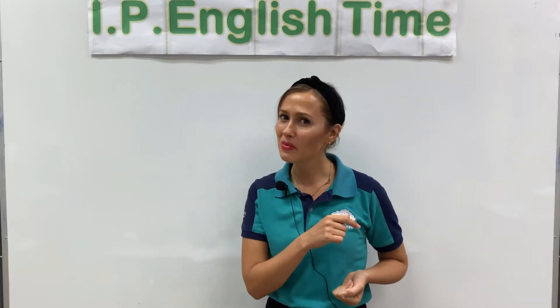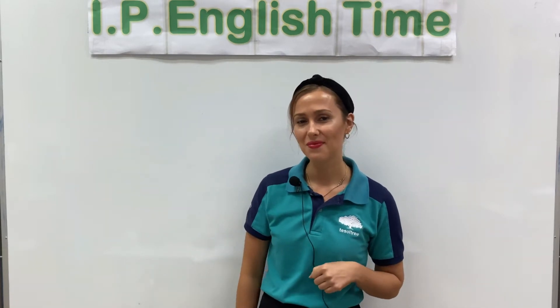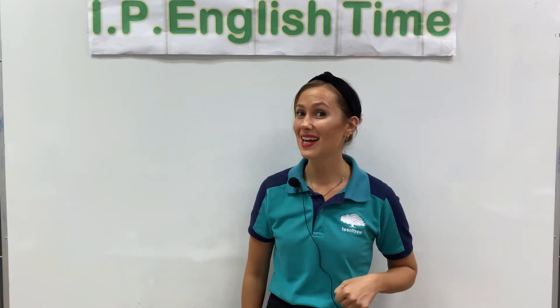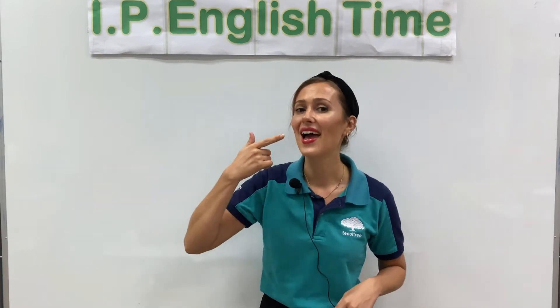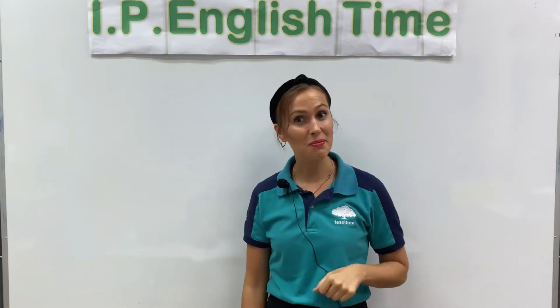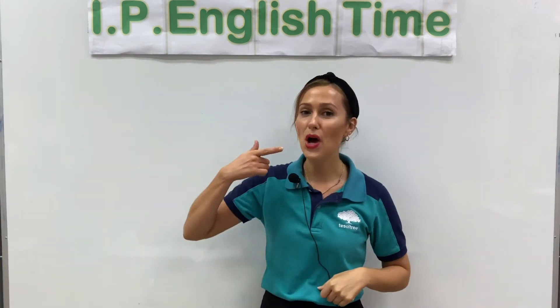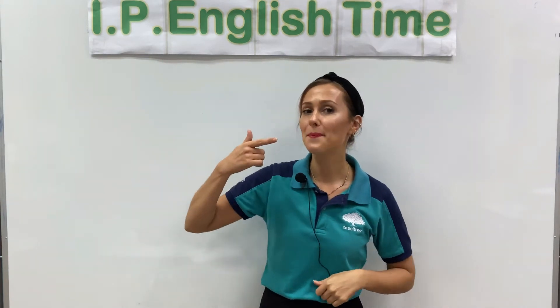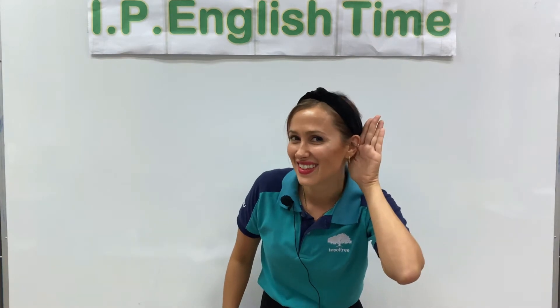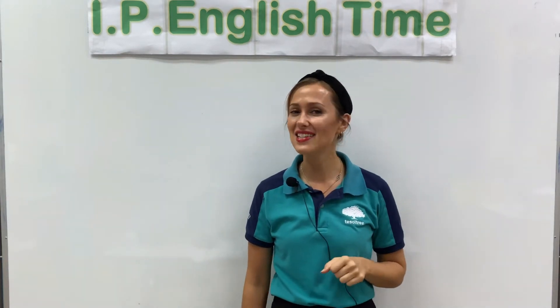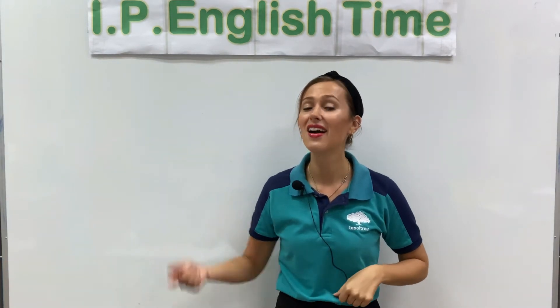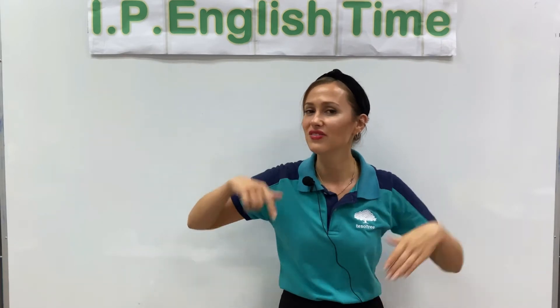Do you remember the letter sounds? Letter A sounds like eh, eh, eh. Letter B sounds like B, B, B. And letter C sounds like K, K, K.